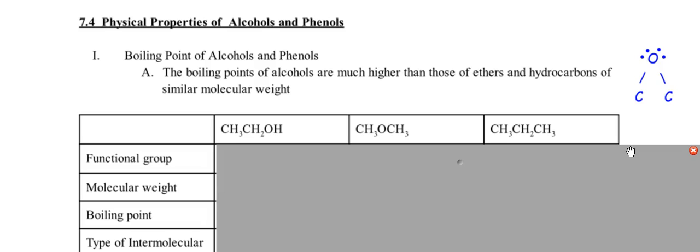Oxygen always needs two lone pairs unless it's an ion. And as it is, has four electron groups, two of them are lone pairs, it's bent. That's key. It's bent.